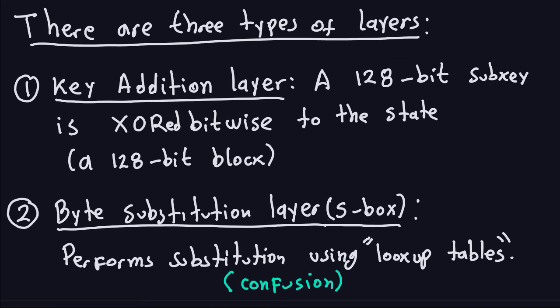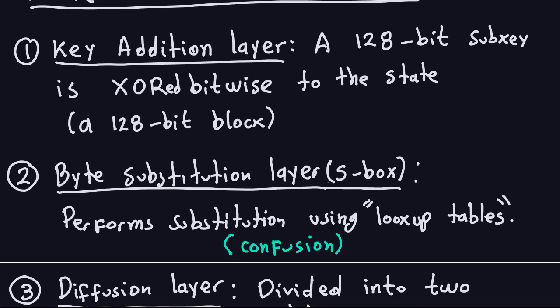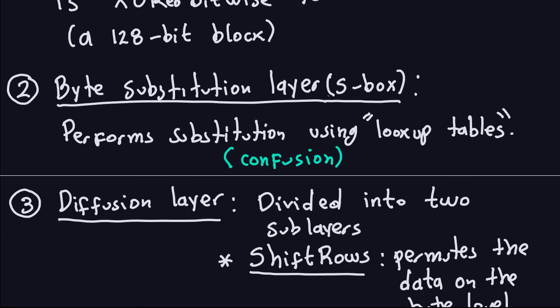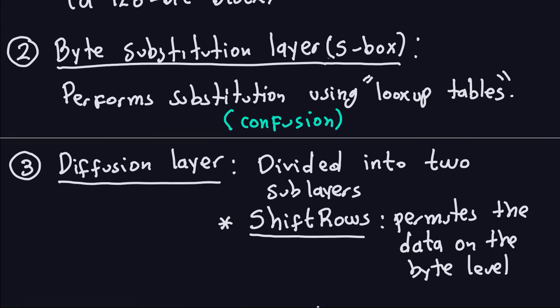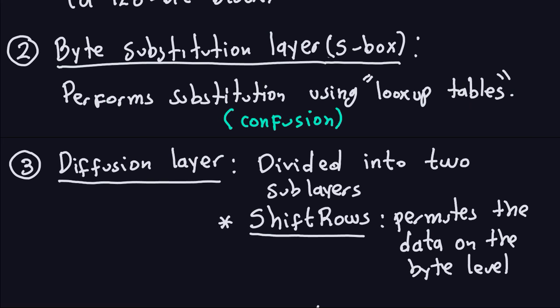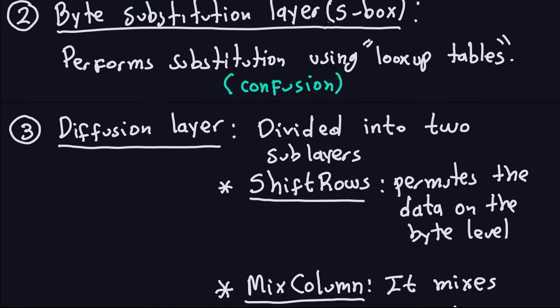There's also the byte substitution layer, related to what we did in DES with S-boxes. In DES we had several S-boxes; here we have only one S-box that performs substitution using a lookup table. An important difference is that DES works on bits, but AES is more of a byte cipher — it works on bytes directly. The byte substitution layer is the one that provides confusion.